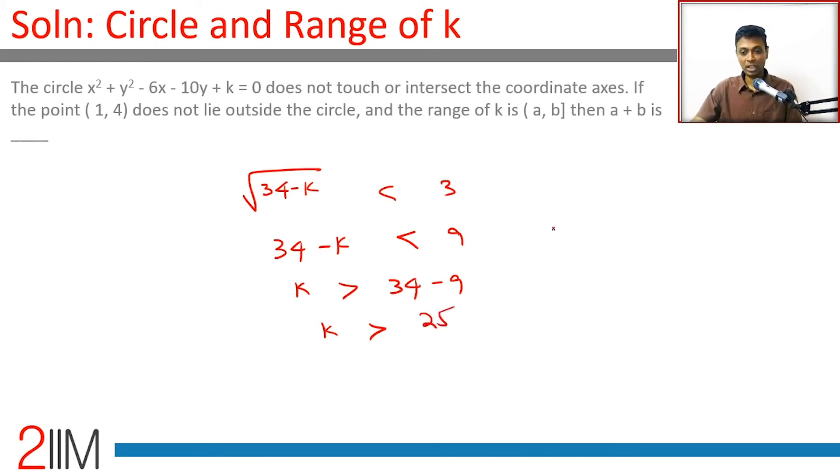k is in the range (25, 29]. Cannot even be equal to 25, can be equal to 29. So this is a and b. a is 25, b is 29. a + b = 25 + 29, which is 54.